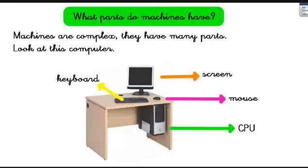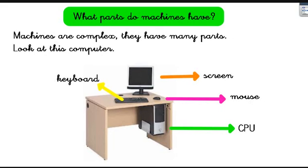We've said that machines have many parts because they are complex, while tools are simple with very few parts. Here's an example: a computer. It has many parts. The screen — it's like a television; you see what happens inside the computer thanks to the screen. The mouse — you move it around to navigate. The keyboard — you use it to type words. And the big box is called the CPU, which is like the brain of the computer — all the computer's thinking happens thanks to the CPU.